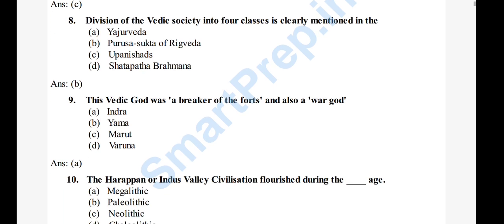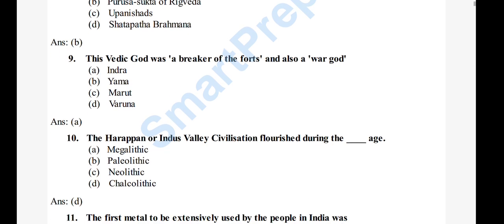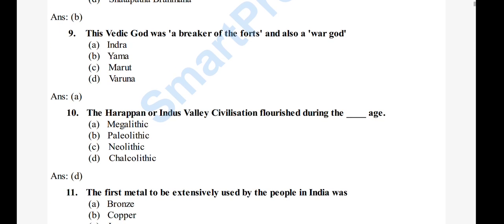Question 10: The Harappan and Indus Valley civilization flourished during which age? Options: A) Prosper, B) Megalithic, C) Paleolithic, D) Neolithic, E) Chalcolithic. The right answer is option D, Chalcolithic.